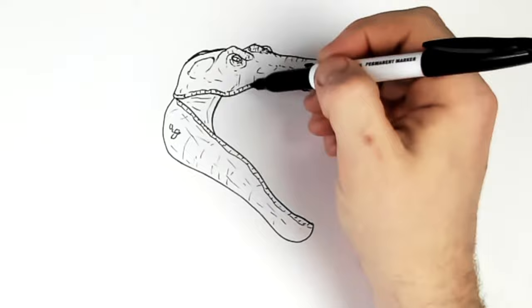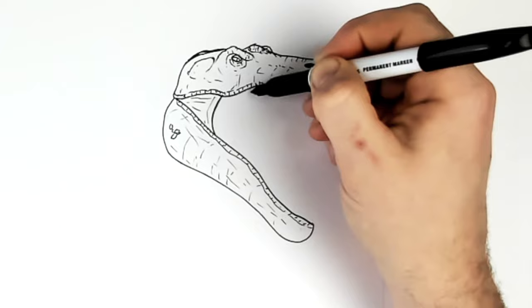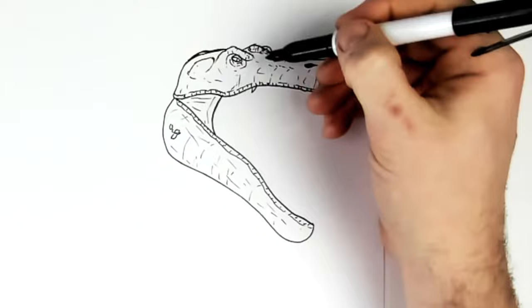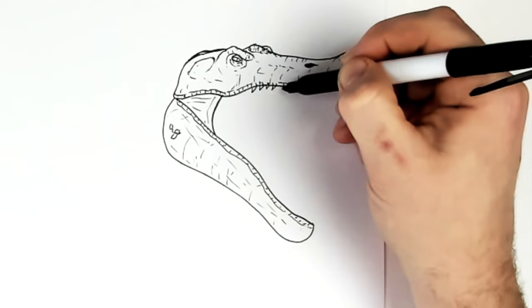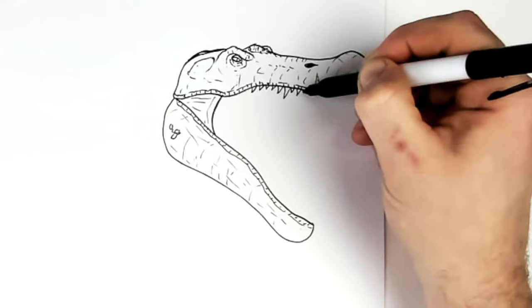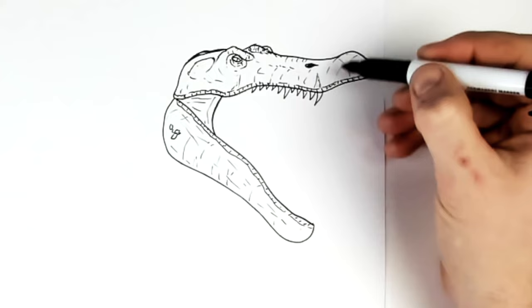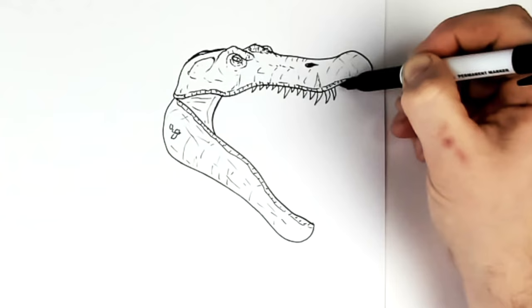And then teeth, right? So teeth coming down from the top jaw. We'll kind of start small here, just on this side of his eye. And then they gradually start to get bigger. Some big ones here. Some big ones at the front.